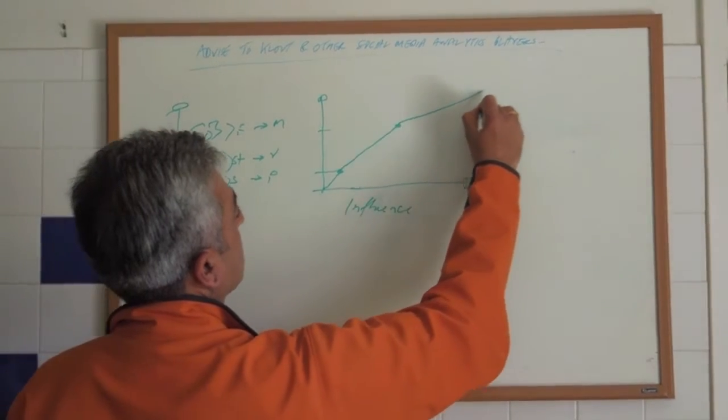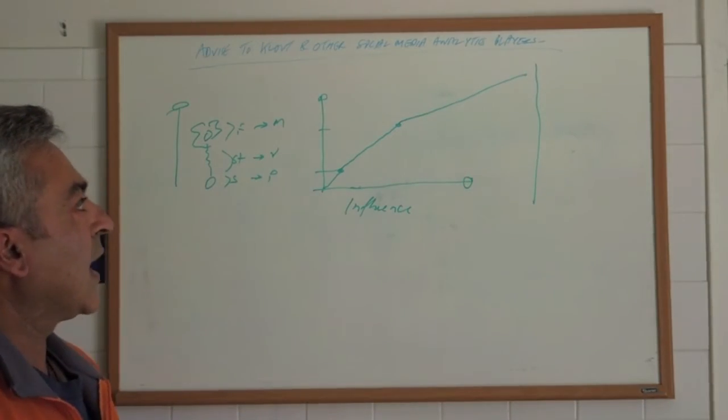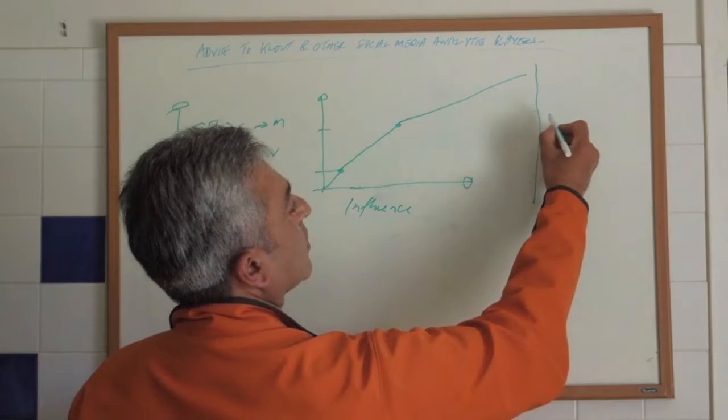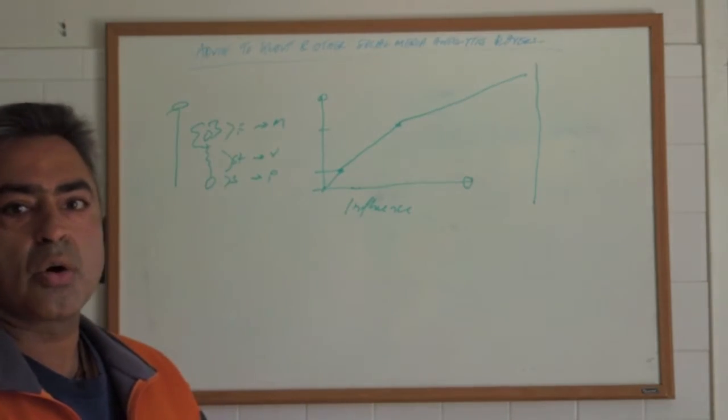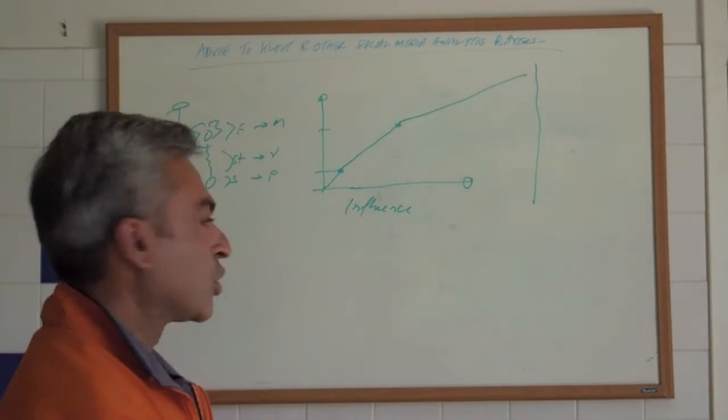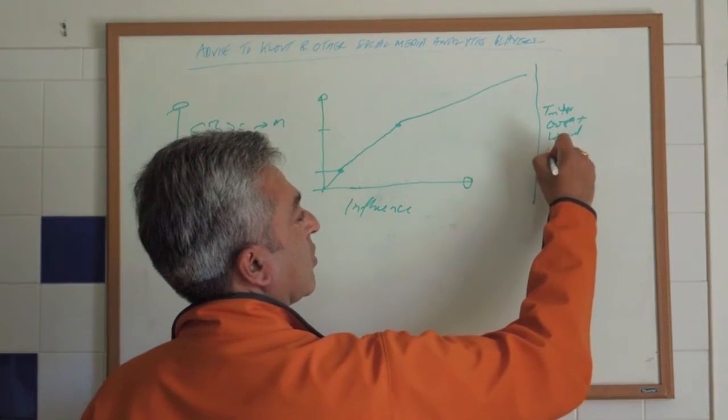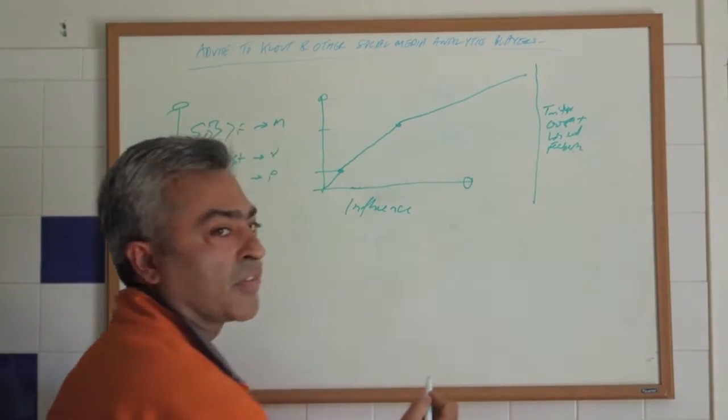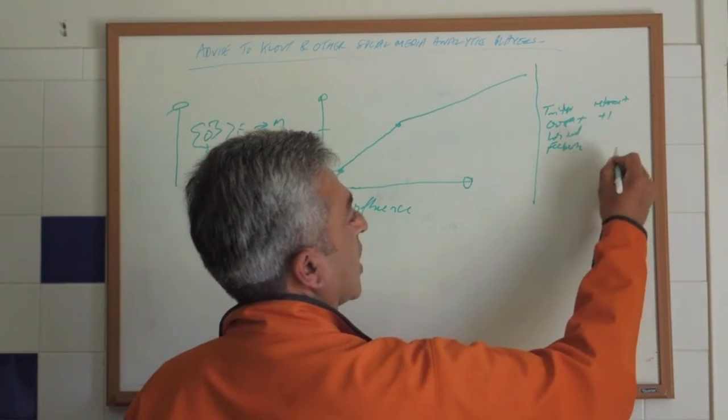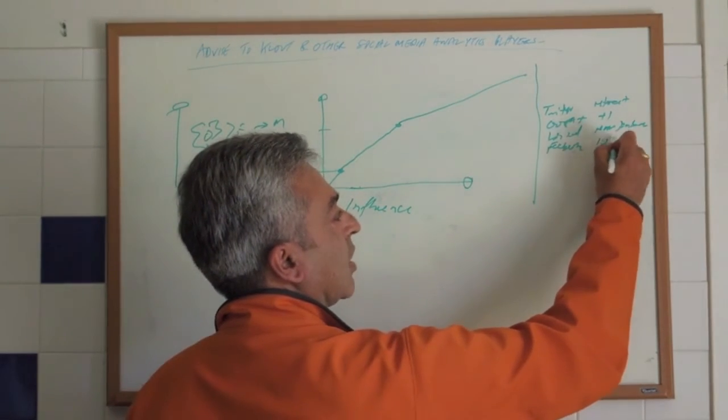And when we think about what's happening in today's analytics world, the social media analytics, and what players like Klout are really measuring, Klout is leveraging or using existing mechanisms that may be based on Twitter, or Google+, or LinkedIn, or Facebook. And the kinds of things by which they measure influence are, for example, retweets, or plus ones, or number of recommendations and endorsements, or maybe likes, or fans.